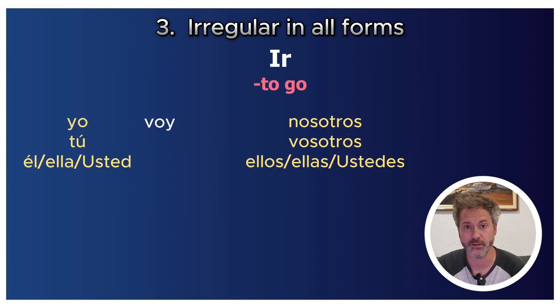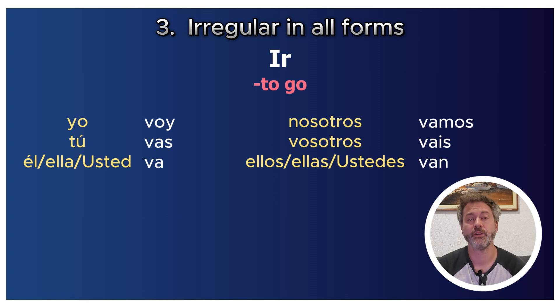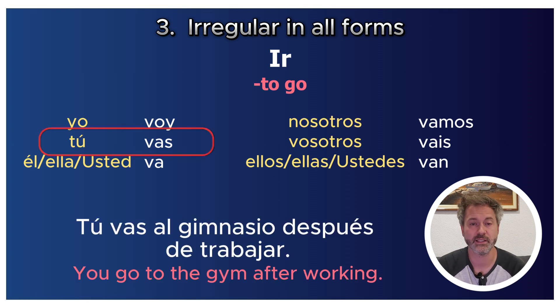The last verb in this category is ir: yo voy, tú vas, él/ella/usted va, nosotros vamos, vosotros vais, ellos/ellas/ustedes van. For example: 'Tú vas al gimnasio después de trabajar' — You go to the gym after working. Although these verbs seem difficult, they do tend to follow a pattern among other conjugations, so when you learn them in the past or future tense, their irregularity follows a recognizable pattern.